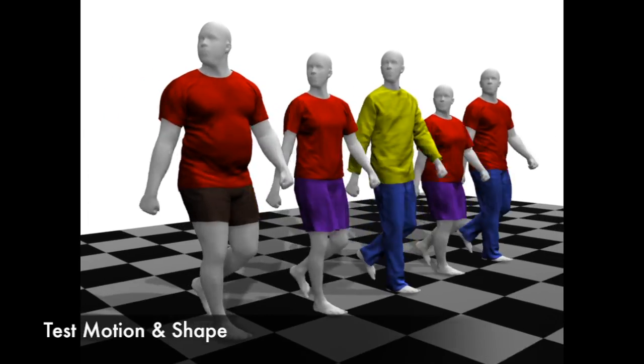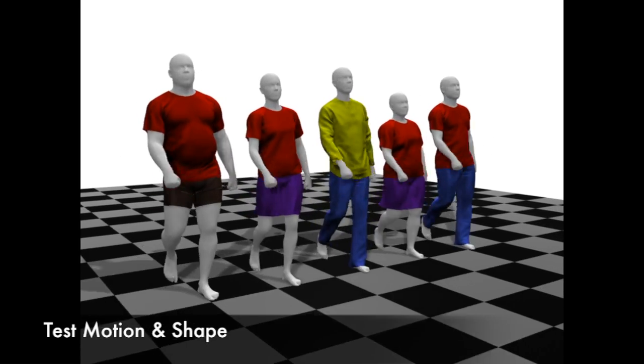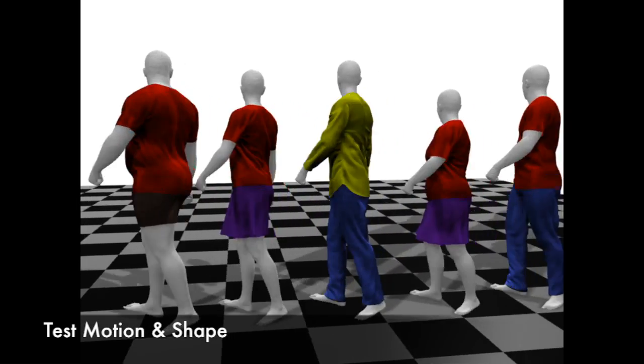For virtual try-on, drape allows any body shape to be automatically dressed and animated to show how a garment will look.